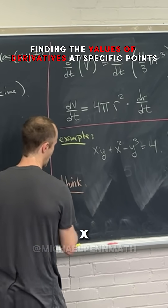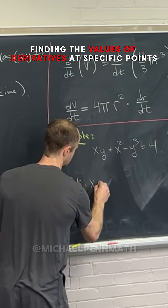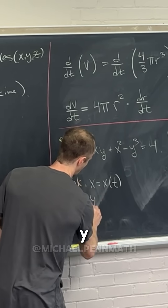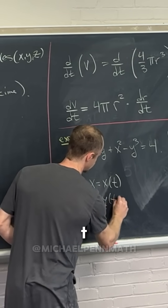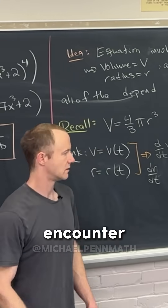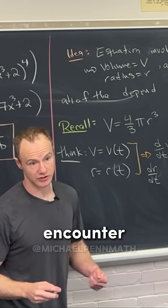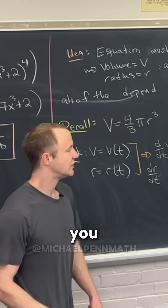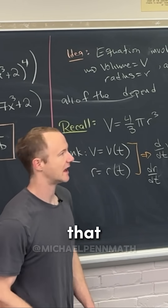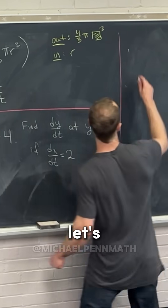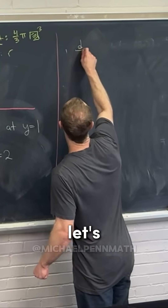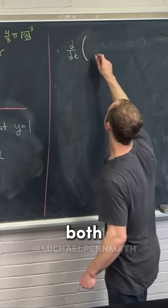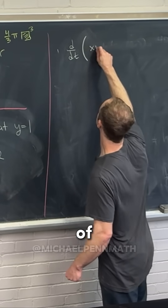Think in the background that x is a function of t, and y is also a function of t. So whenever you encounter the derivative of x or the derivative of y with respect to t, you have to keep that in mind. Now let's apply the derivative with respect to time to both sides of this equation.